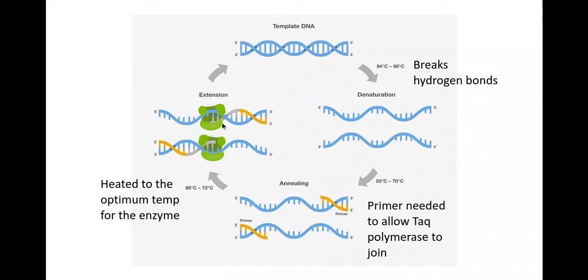That will then come along and join on free DNA nucleotides along the complementary base pairs to form a DNA. So this is found in extremophiles, these are the bacteria that live in hot springs, so that my taq polymerase can work at higher temperatures.